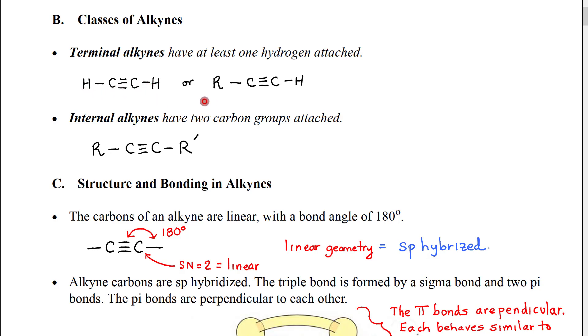Or if the alkyne is part of a longer carbon chain, it would have some type of carbon group attached on one of the two carbons of the triple bond, and it would have a hydrogen on the other one.